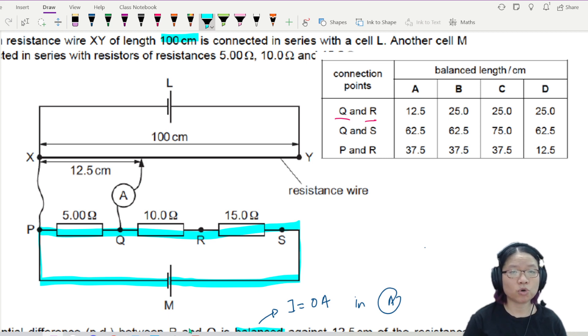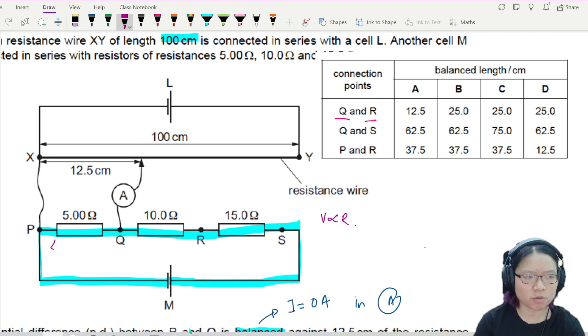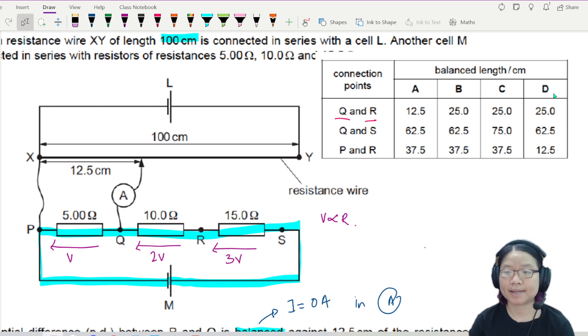So this is M. And I know that the potential of M will be shared evenly across 5, 10, and 15. Now, I don't know what the potential is, but I know the ratio. V is proportional to R. So I can say that, let's say the potential drop here, because the current will flow from S to P. So let's say the potential drop here is V. 5 ohm is V. 10 ohm will be 2V. 15 ohm will be 3V. I don't know what V is. I can count. This V here is unknown.